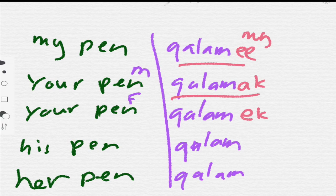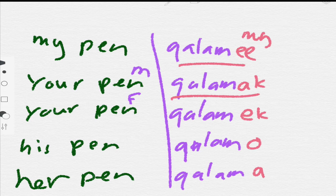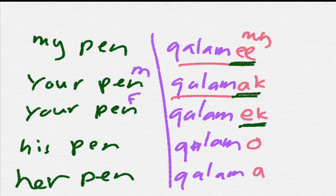If you're talking to a male, 'your pen' is 'qalamak.' To a female, 'your pen' is 'qalamak' (different form). 'His pen' is 'qalamo' and 'her pen' is 'qalamha.' So for any noun you add 'i,' 'ak,' 'ak,' 'o,' and 'ha' to mean my, your (male), your (female), his, and her.